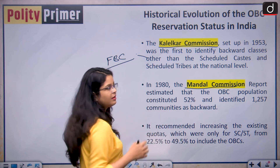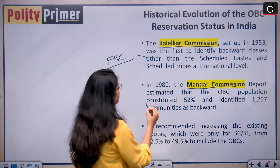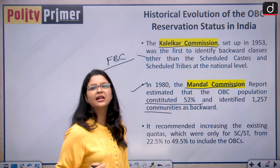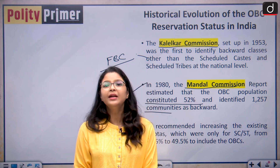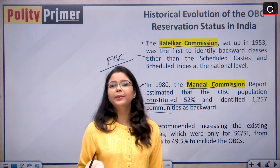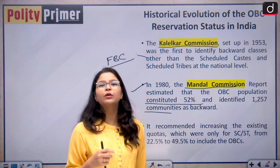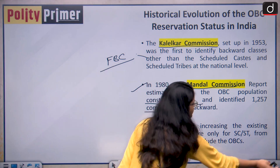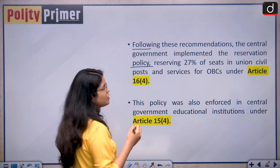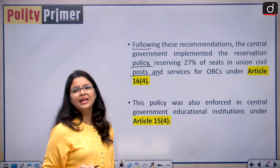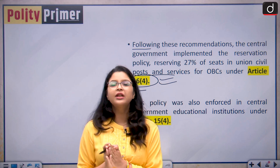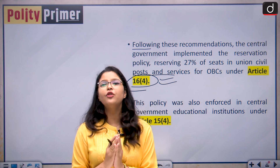In 1980, the Mandal Commission was formed. It recognized that the OBC population constituted 52% of the total population and identified 1,257 communities as backward. It suggested 27% reservation for OBCs in government jobs as well as government educational institutions. This was affirmed and implemented by the ruling government at that time. Following the Mandal Commission recommendations, the reservation policy reserving 27% of seats for OBCs has been granted under Article 16(4) of the Indian Constitution, which talks about positive discrimination in matters of public employment.